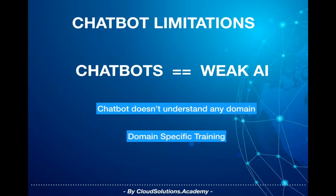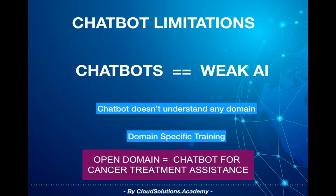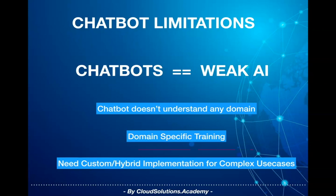Based on the complexity of the domain you would incrementally train and add subdomains. For instance, a chatbot helping you book a cab is an example of a fixed domain, while a chatbot assisting doctors for cancer treatment needs to be trained on types of cancers incrementally. Understanding the meaning of the same word in different contexts is difficult for the current generation of NLP, and you need to rely on custom techniques to handle such conditions.